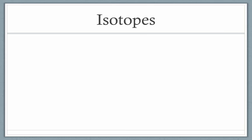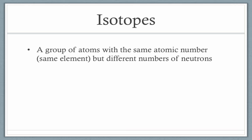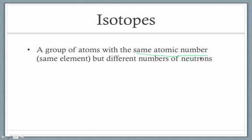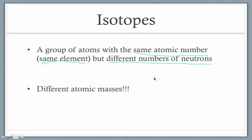There must be something else going on that accounts for that fractional value, and the answer is the concept of an isotope. Isotopes are a group of atoms with the same atomic number — meaning they are the same element — but they have different numbers of neutrons. Changing the number of neutrons does not affect what element you're dealing with, but it does affect the atomic mass. So you get a group of atoms that are all the same element but have different masses, and those masses need to be accounted for in the overall mass reported on the periodic table.